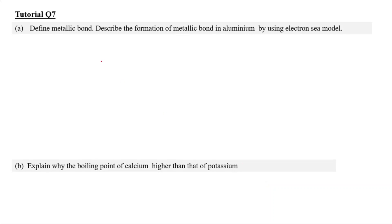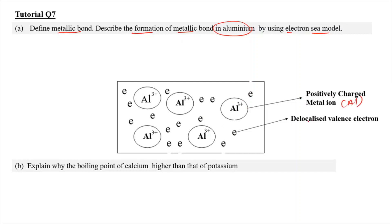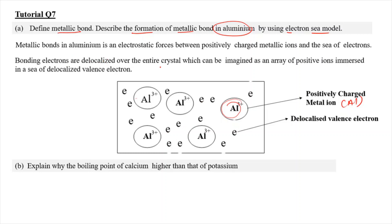For question 7, we need to define the metallic bond and describe its formation in aluminium using the electron sea model. Aluminium forms Al³⁺ ions with delocalized valence electrons that are free to move throughout the array. A metallic bond is defined as the electrostatic force between positively charged metal ions and the sea of delocalized electrons that are free to move. The bonding electrons are delocalized over the entire crystal, imagined as an array of positive ions immersed in a sea of delocalized valence electrons.